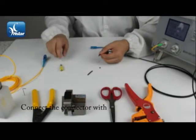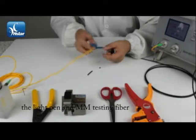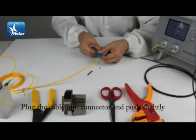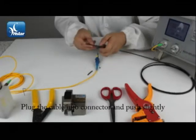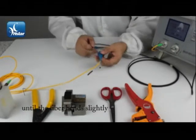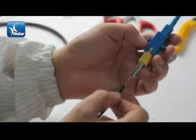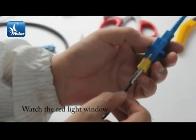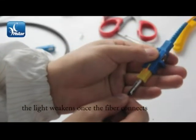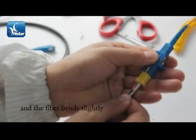Connect the connector with the light pen and mm testing fiber. Plug the cable into the connector and push slightly until the fiber bends slightly. Watch the red light window. The light weakens once the fiber connects and the fiber bends slightly.